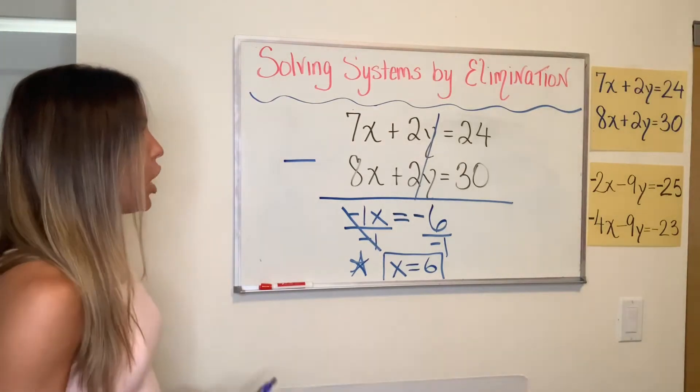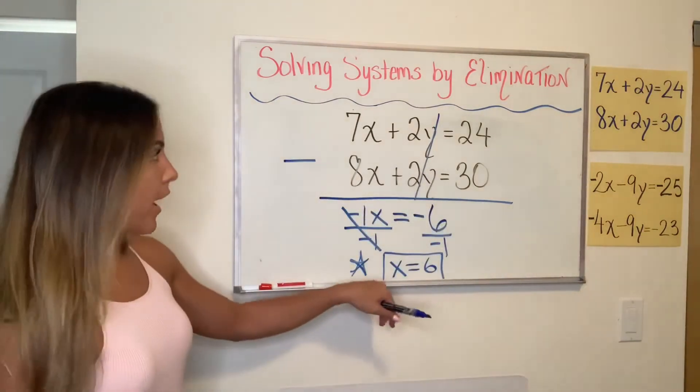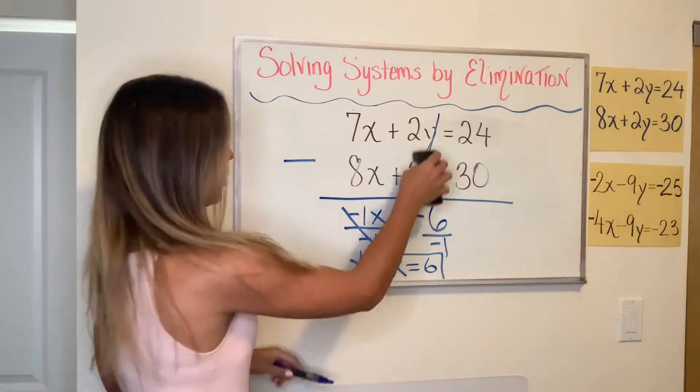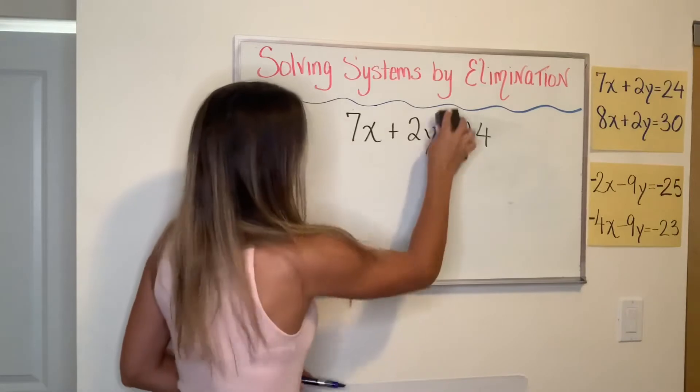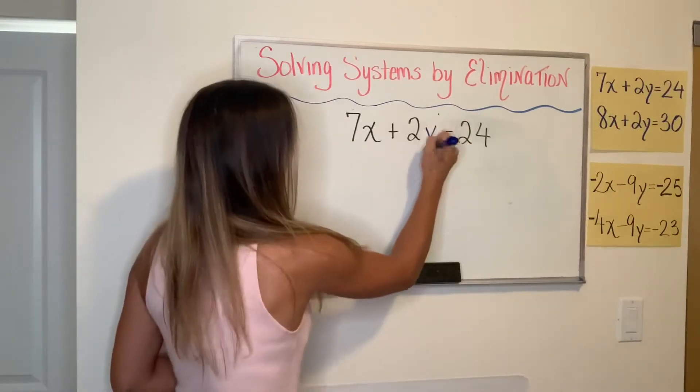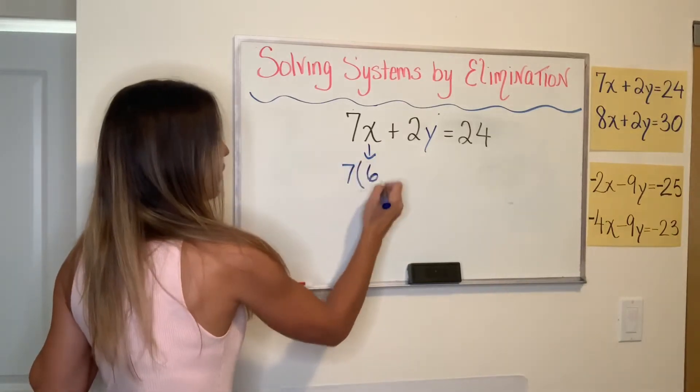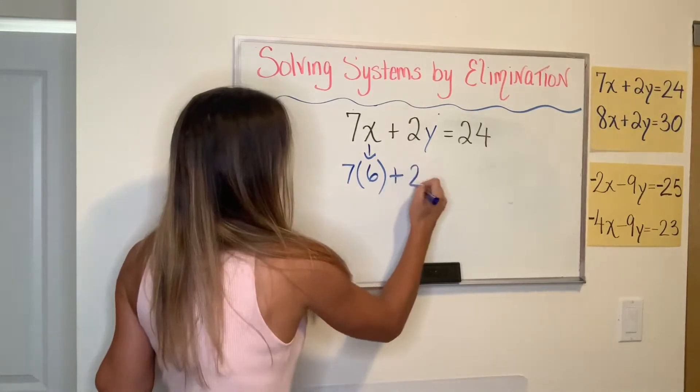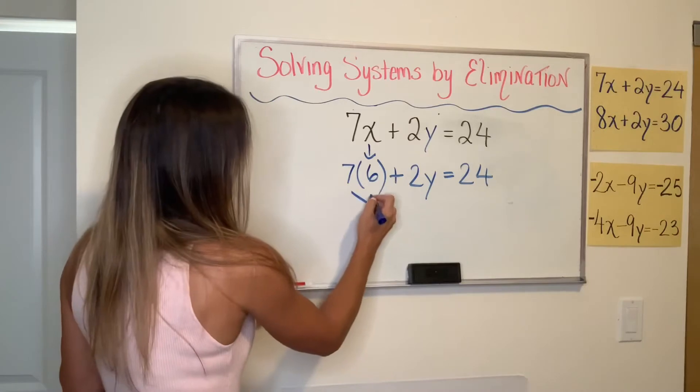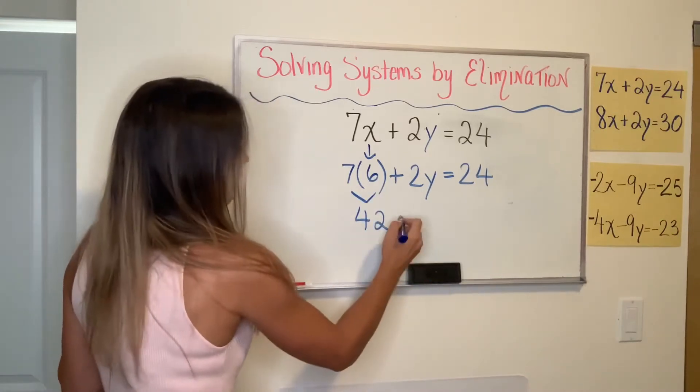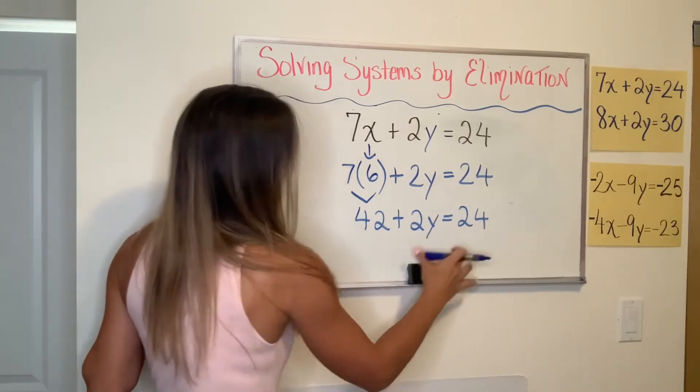So now, just like last time, you'll pick one of the equations, whichever one you want, doesn't matter. And we'll substitute our X value of six back into one of these equations. So I'll just do the first one. So since X is six, what we've done in the last video is that we're just going to take X in the first equation and replace it with six now. So I have 7 times 6 plus 2Y equals 24. Seven times six is 42. Bring down my plus 2Y, bring down my equal sign and bring down my 24.